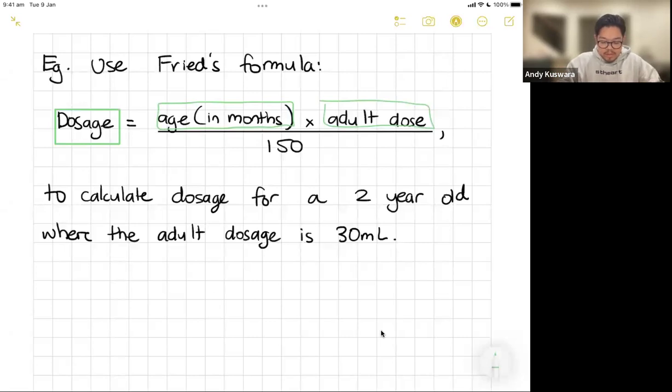Okay, now the key thing here is it's going to say in months. Now to calculate the dosage for a two-year-old, you know, start underlining bits and pieces here - two-year-old - and the other adult dosage is 30 mL. Okay, so I'm going to write this out. My dosage is going to be what? Age in months. So two years is how many months? I hope you said 24. Okay, 12 months in a year, so 24 months in two years. So I'm going to write 24, and I don't have to write months, I just need the number.